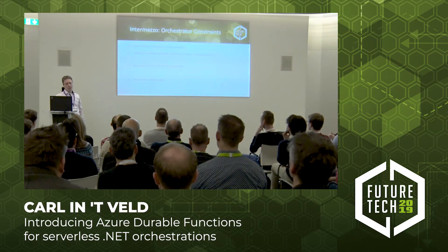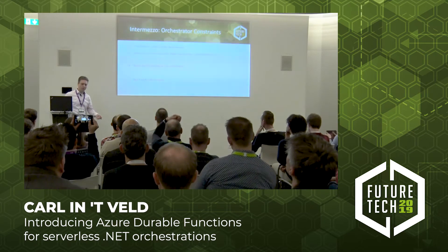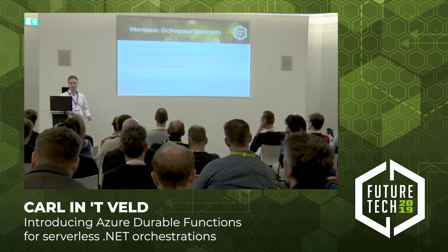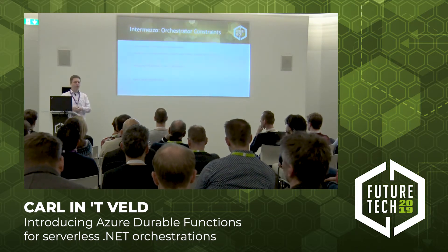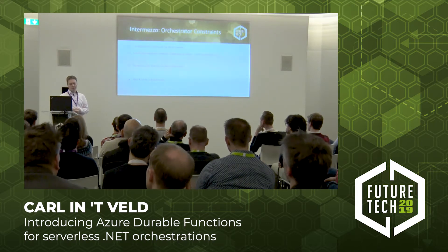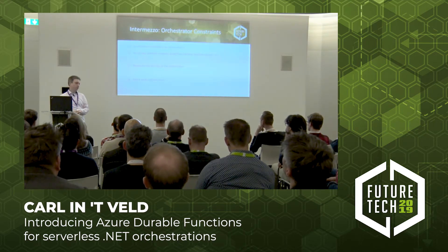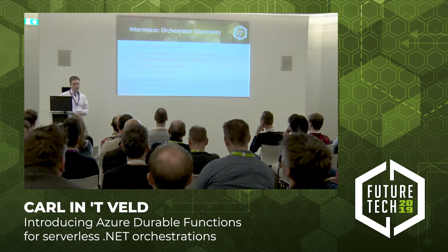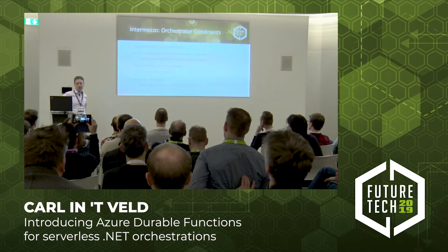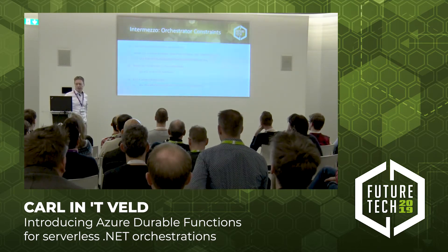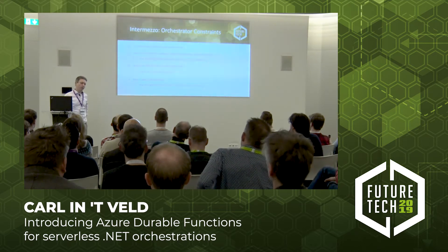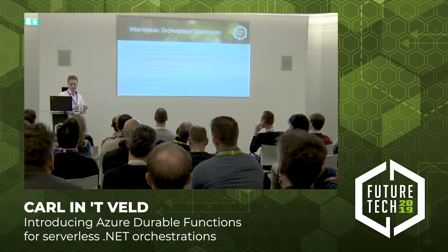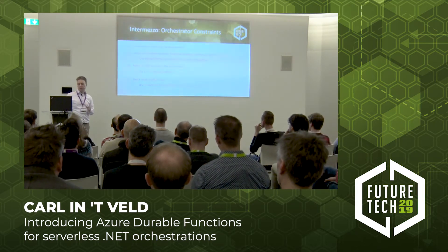An important intermezzo: there are constraints when writing orchestrator code because of its replaying behavior. Your orchestrator must be deterministic — you cannot have random behavior based on generating IDs, datetime.now, or doing IO directly. And you cannot write infinite loops. But there are solutions: for datetime purposes, the context offers a CurrentDatetime that is fixed for every replay. For IO, put it in activity functions. And for infinite loops — if you really want an orchestrator that never ends — use ContinueAsNew, which reschedules itself and kicks off again.